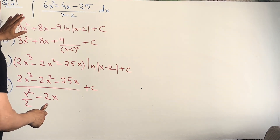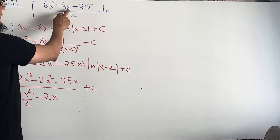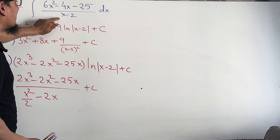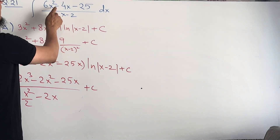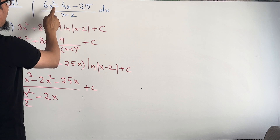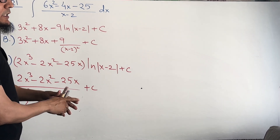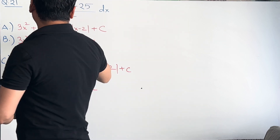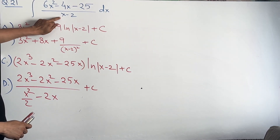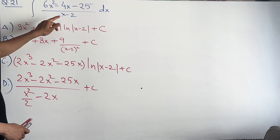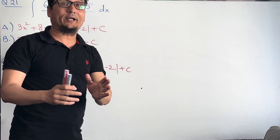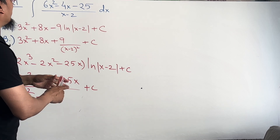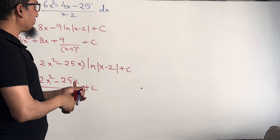We have an integration of (6x² - 4x - 25) divided by (x - 2). Remember one thing: if the numerator is a quadratic equation and the denominator is a linear equation — that is, a linear factor — and if the degree of the numerator is greater than the degree of the denominator, then you must divide the numerator by the denominator until the degree of the remainder is less than the degree of the denominator.